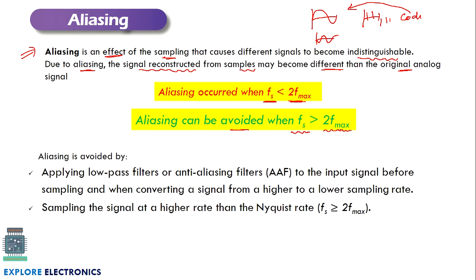If it is an analog signal, we need to choose the maximum frequency of that signal and keep our sampling frequency FS at more than twice that maximum frequency. This way we can avoid aliasing.